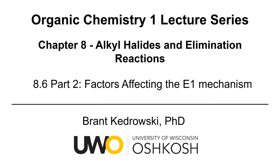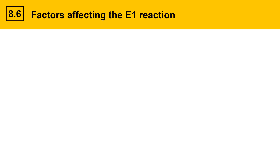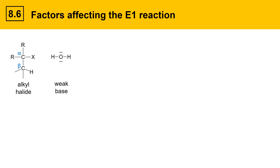Hello everyone, my name is Brant Kudrowski and this organic chemistry video covers factors affecting the E1 mechanism. The E1 mechanism is a reaction between an alkyl halide or other substrate that has a good leaving group. That substrate has an alpha position and a beta position. On the alpha position there's a leaving group, and on the beta position there's at least one hydrogen — a proton that can get plucked off. The other reactant is a weak base.